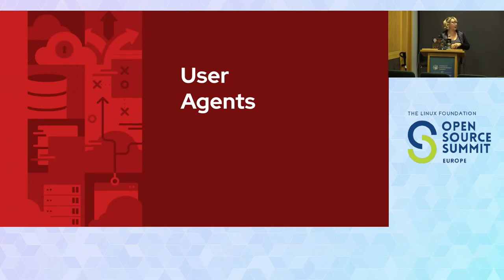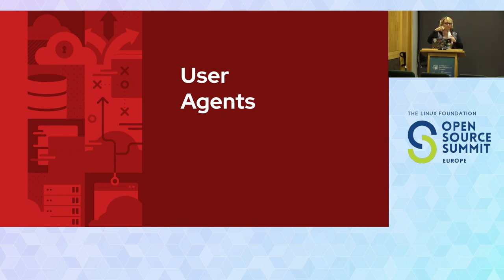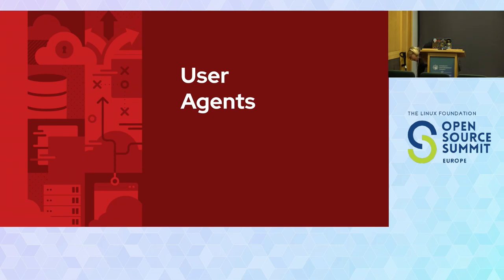User agents — continuing with definitions. This is assistive technology, sometimes abbreviated as AT. It's really any device, software, or equipment that helps people interact with a web page. It works around the challenges that people might have in learning, communicating, and functioning on that digital asset.